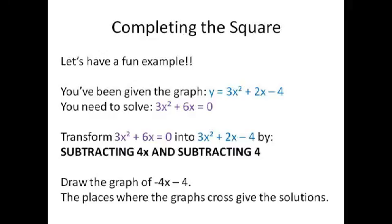So we're going to explain this with an example. Say you've been given the graph y equals 3x² plus 2x minus 4 and you need to solve 3x² plus 6x equals 0. First, you've got to transform your graph that you've been told to solve into the graph that you've been given. If you look at it here, you subtract 4x and subtract 4 to get the blue graph. So you draw the graph of minus 4x minus 4, so y equals minus 4x minus 4 onto your graph paper. And the places where the graphs cross should give your solutions. And I hope that made sense.